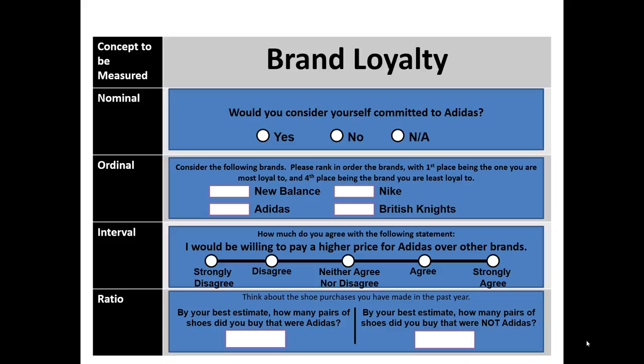Finally, think about the shoe purchases you have made in the past year. By your best estimate, how many pairs of shoes did you buy that were Adidas? By your best estimate, how many pairs of shoes did you buy that were not Adidas? Since part of the definition of brand loyalty includes the idea of repurchase, we could make an inference that people's objective behavior regarding Adidas shoe purchase relative to other shoe purchase is an indicator of brand loyalty. And since measuring how many shoes people actually bought is objective, zero means you really did buy zero shoes — making this ratio-level data. However, brand loyalty itself has a subjective property component, so this final measure is truly a bit of a construal of the underlying idea of brand loyalty.